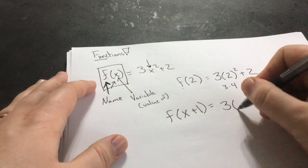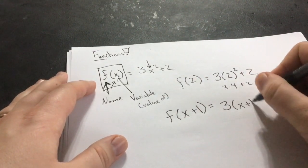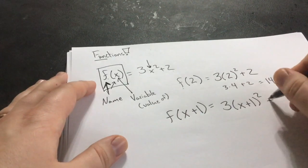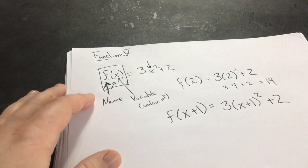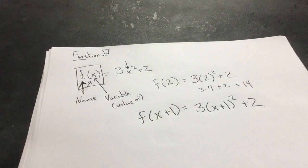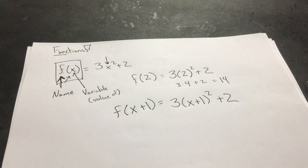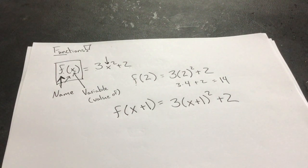We would write it like this: 3 times x plus 1 squared plus 2. And then we would have to ultimately solve that, figure that out. This is the general idea, again, behind the foundational information we're going to need to go into derivatives.